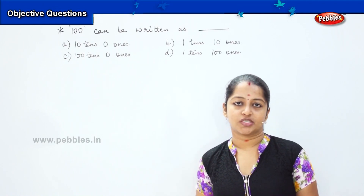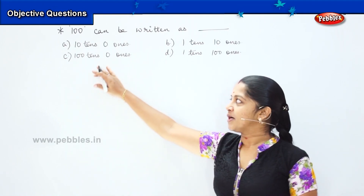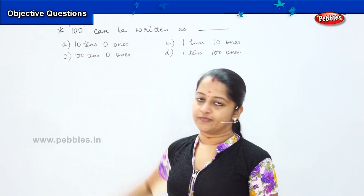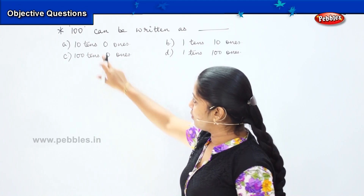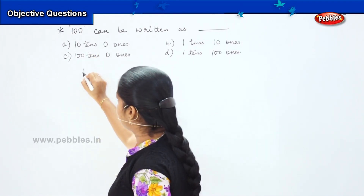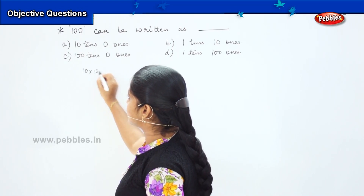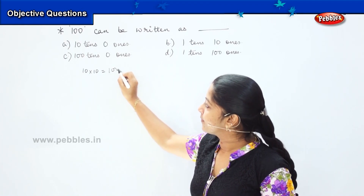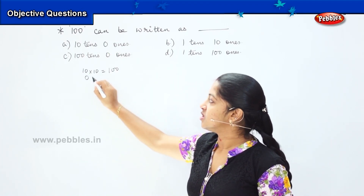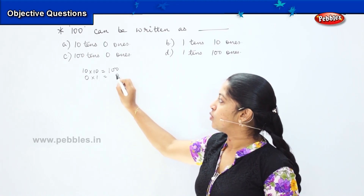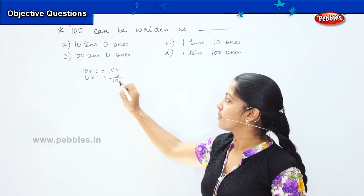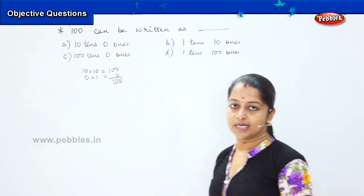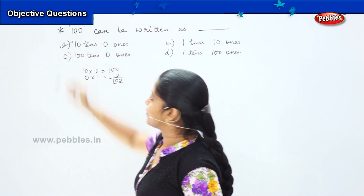Children, when you see this pattern of question, don't get tensed. They are just confusing us by writing the numbers. So, what do you mean by 10 tens? 10 into 10 is 100. And 0 ones means 0 into 1 is 0. So my answer is 100. Option A — 10 tens and 0 ones — is the right answer.